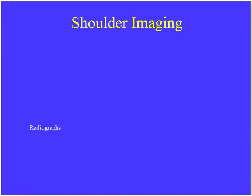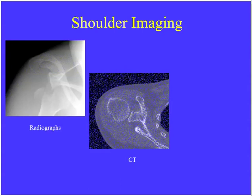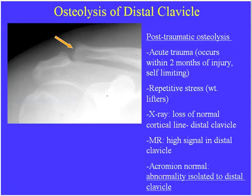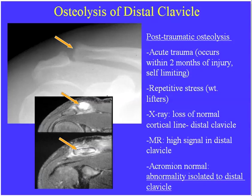That covers imaging modalities. Moving to the shoulder — one thing repeatedly demonstrated on the exam is osteolysis of the distal clavicle. This is a post-traumatic osteolysis, typically occurring within a couple of months of acute trauma, or related to repetitive stress as seen in weight lifters. On radiograph, you'll see loss of the normal cortical white line and lucency within the distal one to two centimeters of the clavicle. The acromion will be completely normal. On MR, you'll see high signal within the distal clavicle, possibly periostitis and pericapsular edema, but the acromion itself is normal.